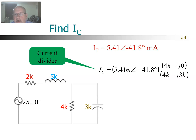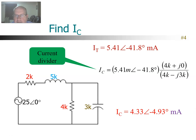So: total current 5.4 milliamps, the opposite branch is the 4K resistor, and then the sum of both branches is 4K − j3K. Again, that's the current divider for AC, the special case for two branches. We do that arithmetic and we get the capacitor current at 4.33 ∠−4.9 milliamps. Just a reminder: when using this current divider for two branches, the numerator is the opposite branch of what you're looking for. So since we were looking for the capacitor current, the numerator is going to be the Z of the resistor.